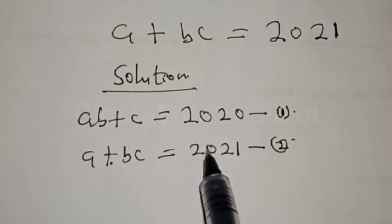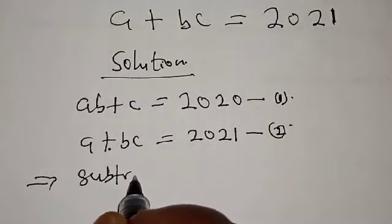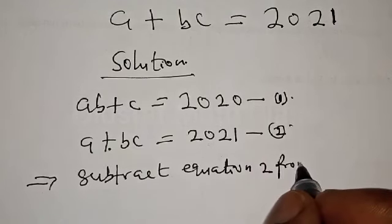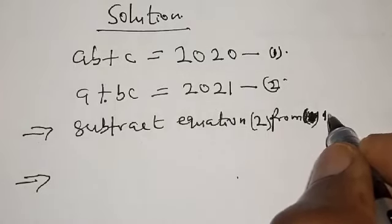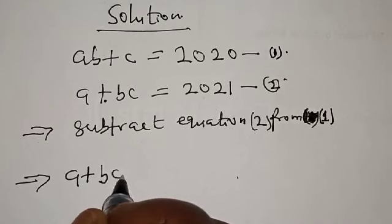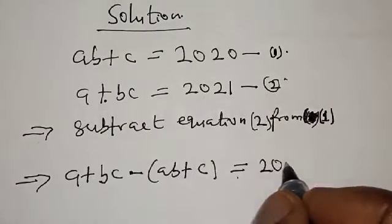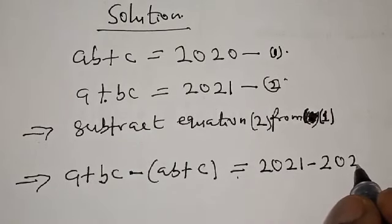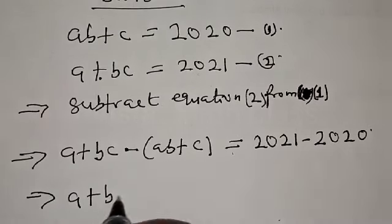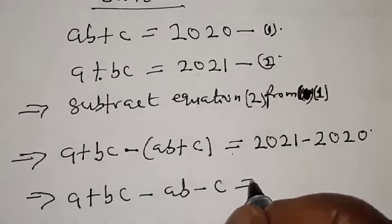The essence of this subtraction is that the right-hand side will equal 1. Subtracting equation 2 from equation 1, this implies we have A plus BC minus AB plus C equal to 2021 minus 2020. This implies A plus BC minus AB minus C equals 1, opening the bracket with the minus sign.